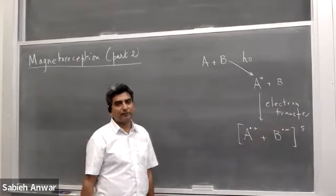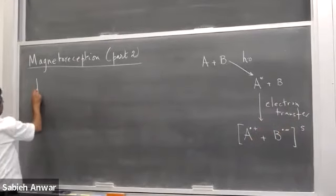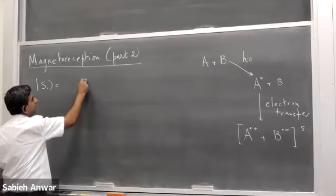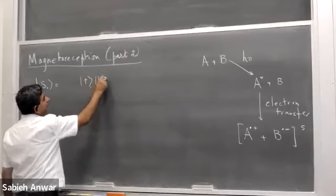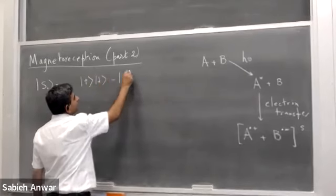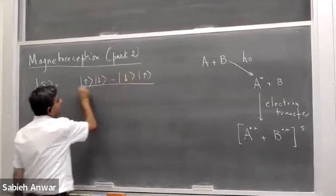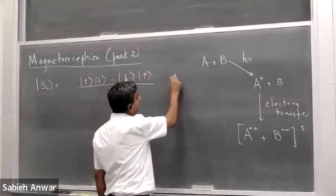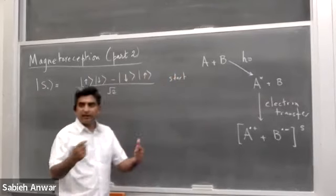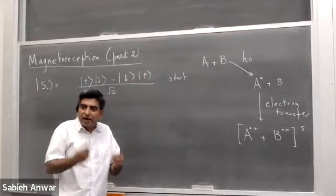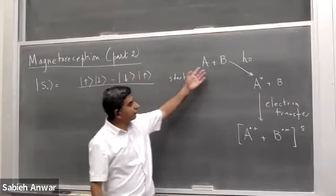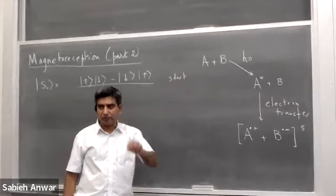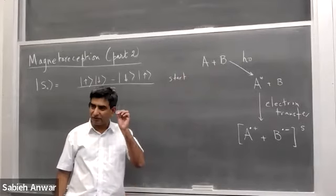We have two electrons which start off in the quantum state S₀, given by spin-up on the first electron and spin-down on the second electron, or spin-down on the first and spin-up on the second, normalized. This is your singlet state — a radical pair in which the two electrons start off in a singlet quantum state. This is photochemically triggered: the reaction can only take place in the presence of a photon, a light signal.